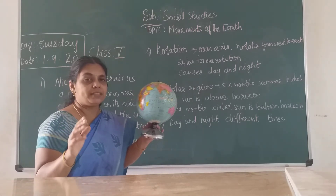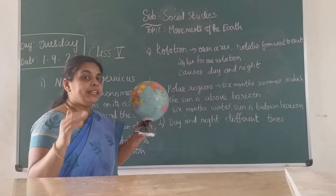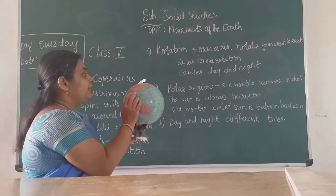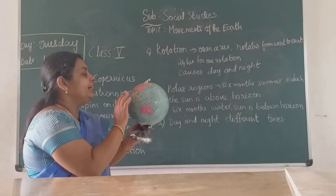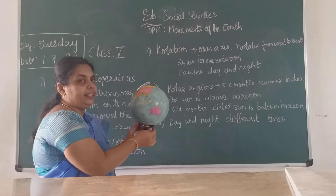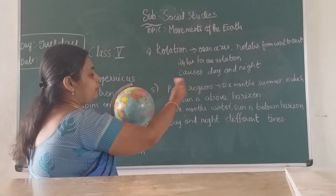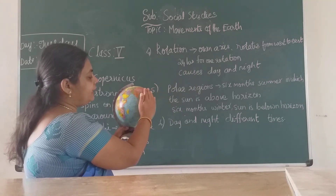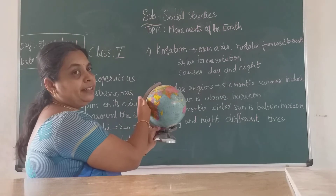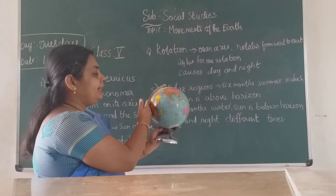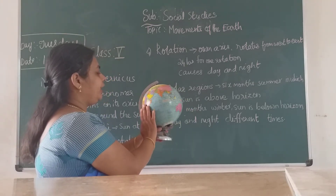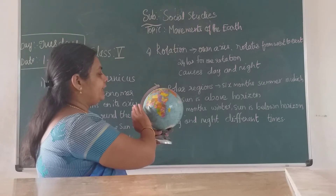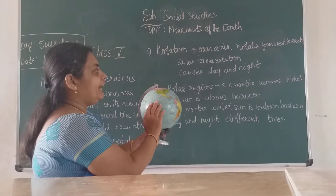It takes 24 hours for one rotation — that's why we say we have 24 hours in a day, which includes both day and night. Wherever the part of the earth receives sunlight, it will be day; the other side, which does not get sunlight, will be night. This rotation causes day and night.